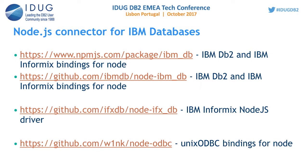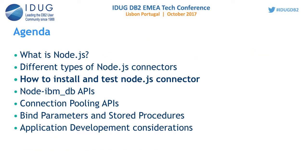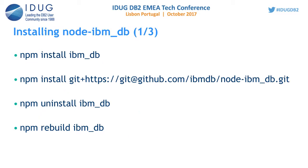Now we will see how to install and test the Node.js connector. To install it, there is a simple command: npm install ibm_db. If you have Node.js installed, npm will work from any directory if its path is set in the system environment variable.